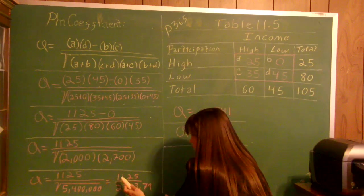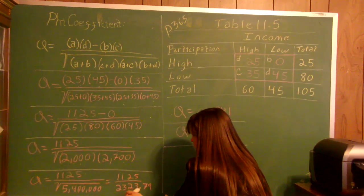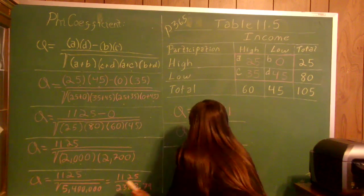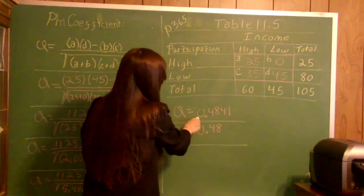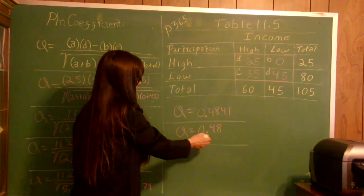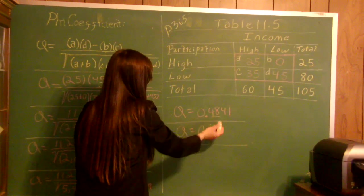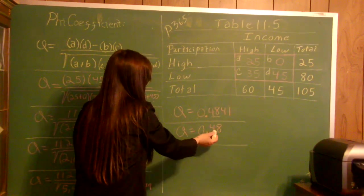So 1,125 divided by 2,323.79 equals 0.4841. As you see in your textbook, rounded to the second decimal place (the hundredths), that equals 0.48.